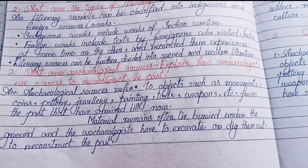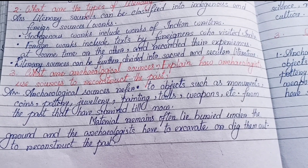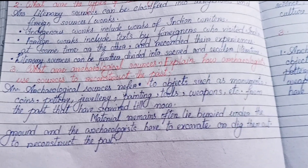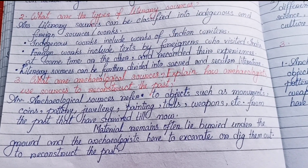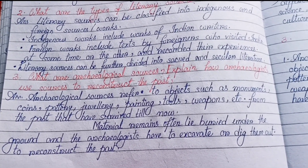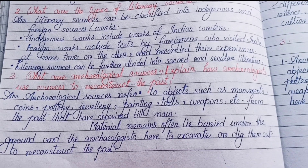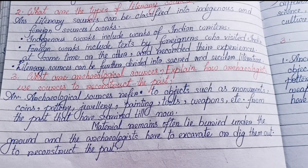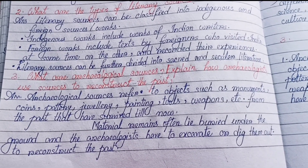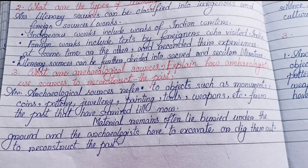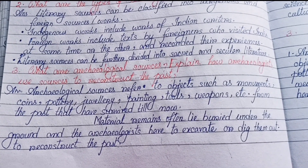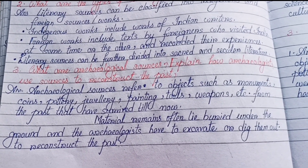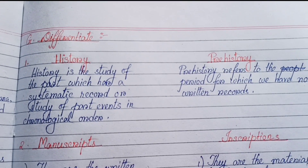Section F, Number three: what are archaeological sources? Explain how archaeologists use sources to reconstruct the past. Archaeological sources refer to objects such as monuments, coins, pottery, jewelry, paintings, tools, weapons, etc. from the past that have survived till now. Material remains often lie buried under the ground, and archaeologists have to excavate or dig them out to reconstruct the past.